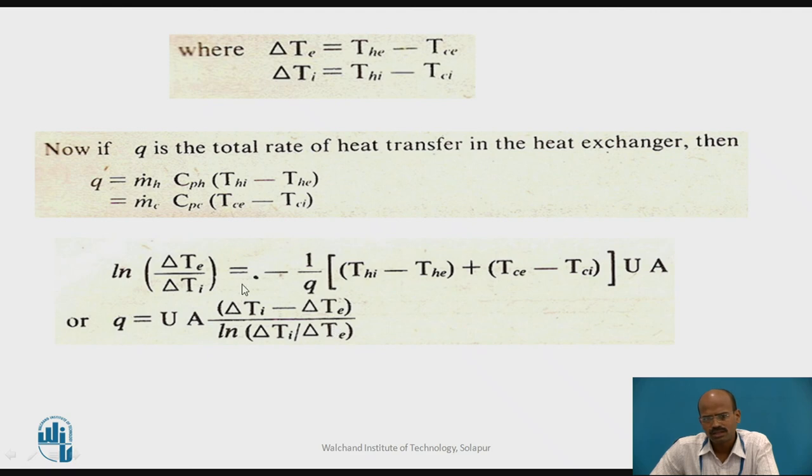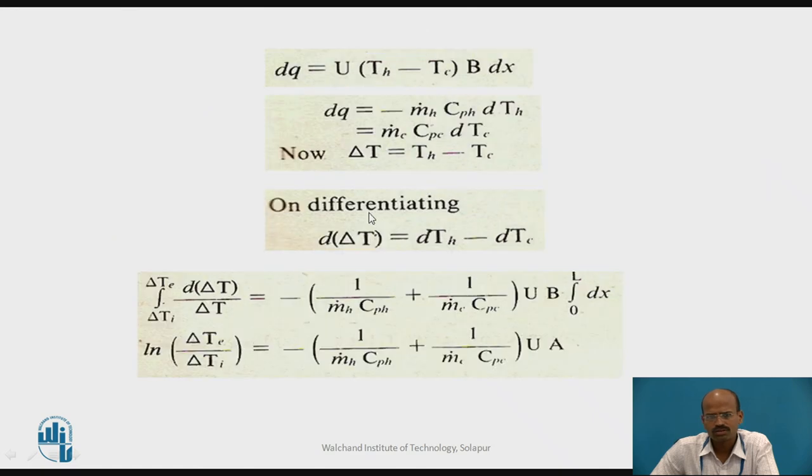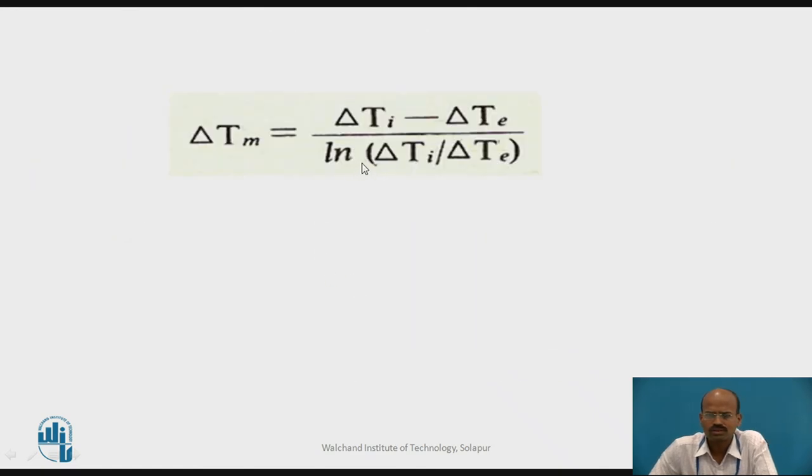Now, if I will consider this ratio which has the log, I can use the notation either delta T M means log mean temperature difference or LMTD. For parallel flow heat exchangers, the log mean temperature difference is the temperature difference of the fluids at inlet minus temperature difference of the fluids at outlet to the log of delta T I to delta T E.